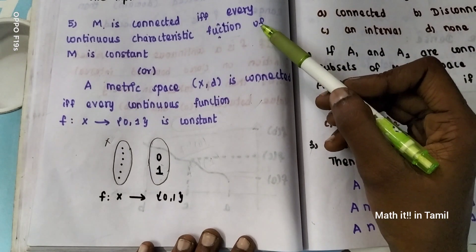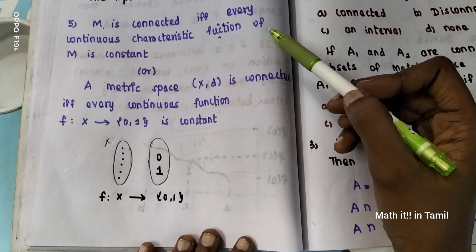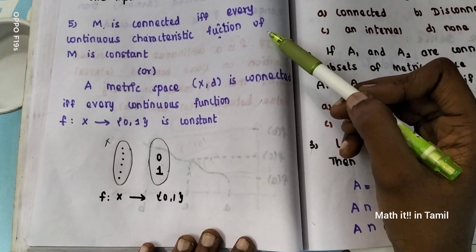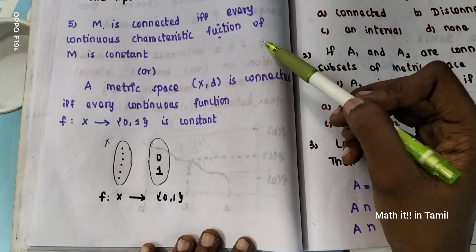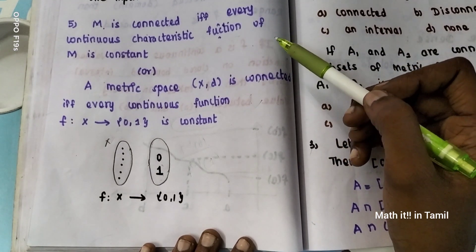Now the next statement: M is connected if and only if each continuous characteristic function of M is constant.